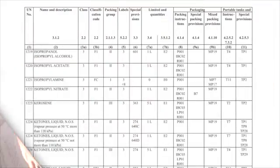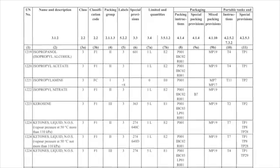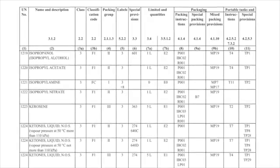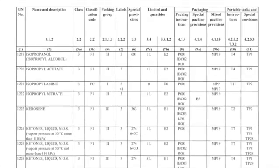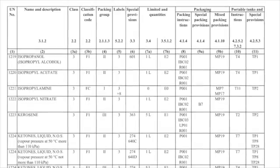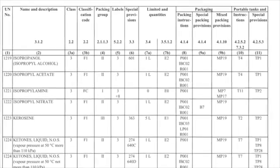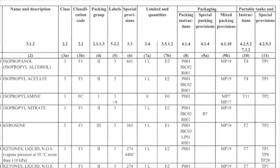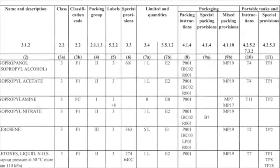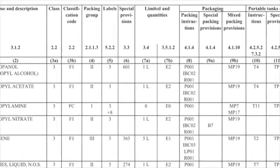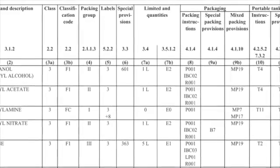If a substance, mixture, or article is allowed to be transported in limited quantities, a weight or volume is given in the relevant column of the dangerous goods list. This quantity is the maximum size allowed for each inner packaging or article.